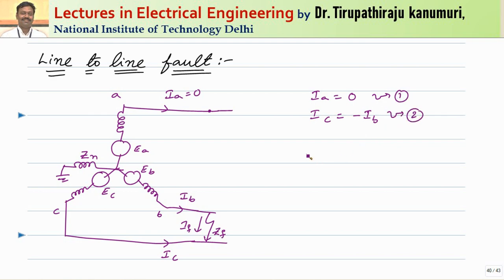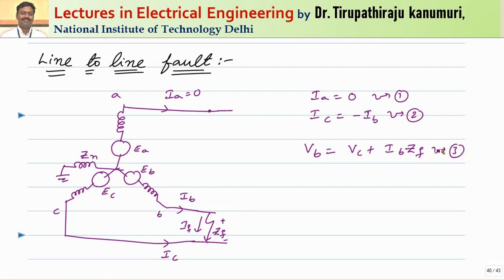Taking that as equation number 2. The third equation: voltage at point B — because the current is passing through this path, Vc through Zf gives a voltage drop. So Vb is equal to Vc plus Ib into Zf. Let us take it as equation number 3.